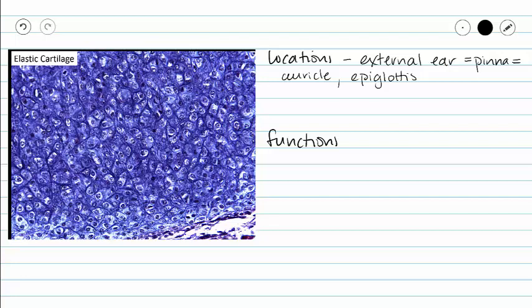If you take your external ear, you can fold it in lots of different directions and when you let go, it pops right back into its original shape. That's the function of our elastic cartilage — it is going to bend and then recoil back into its original shape. We see that both with our external ear, which you can manipulate yourself, and in our epiglottis: whenever we swallow it bends to cover the glottis, and when we're done it pops back up into its original shape.